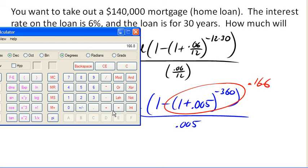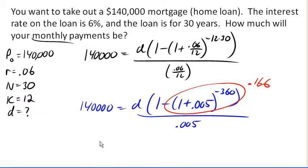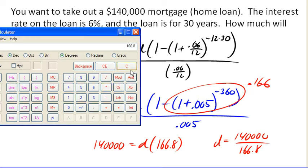So I've got 140,000 equals d times, what was that again? 166.8. So d is going to be 140,000 divided by 166.8. So that's 140,000. I'm missing a 0. No, I got it divided by 166.8 is 839,